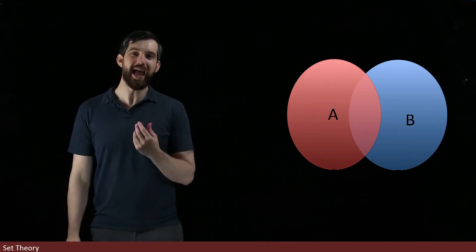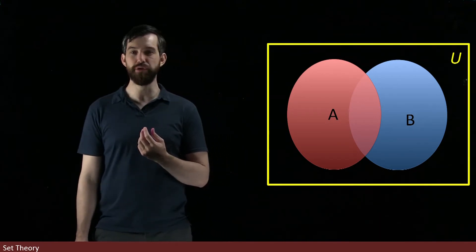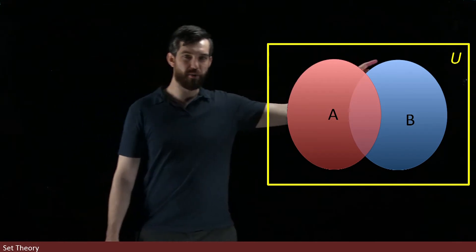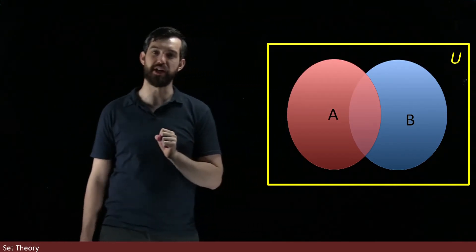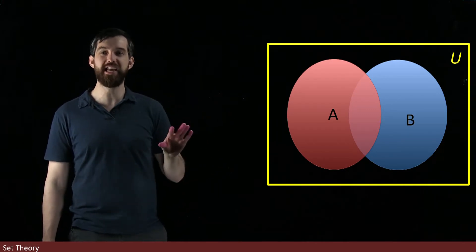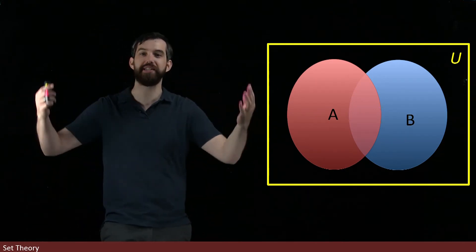So what we have is the notion of a universe and we usually denote it by this, a big square box on the outside. We call it U for universe here. And all of the sets that we're talking about are all contained within this sort of larger contextual set.